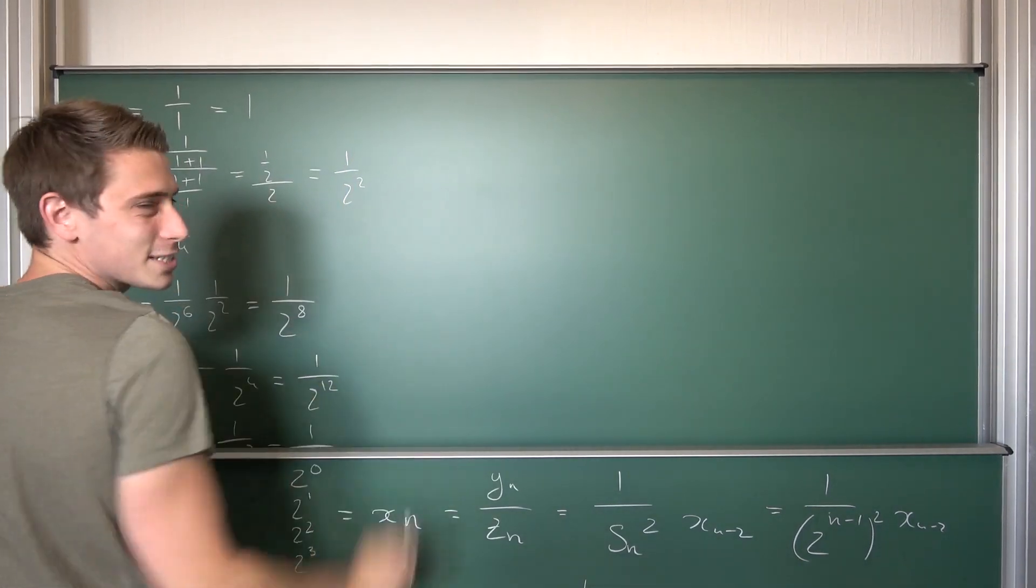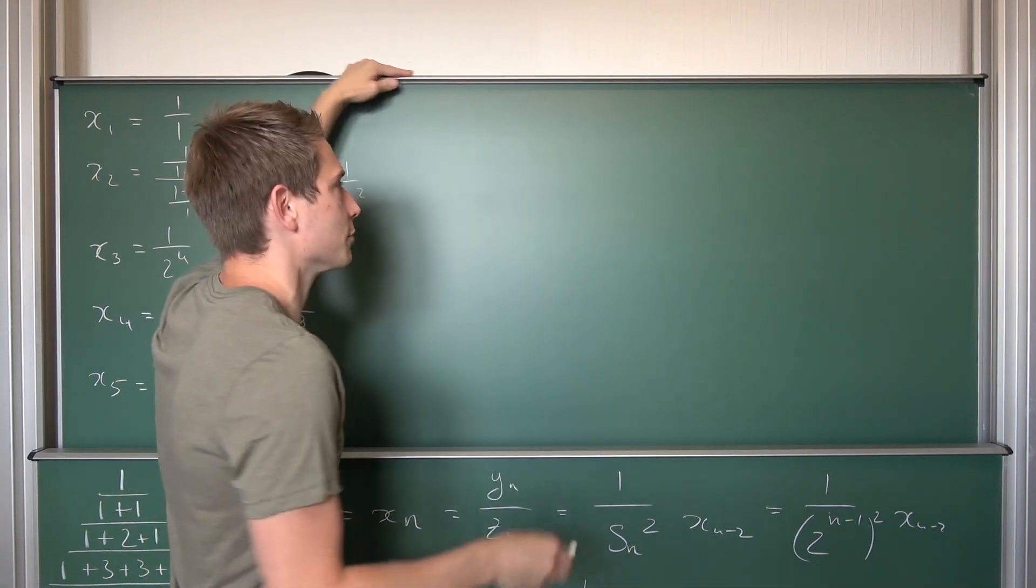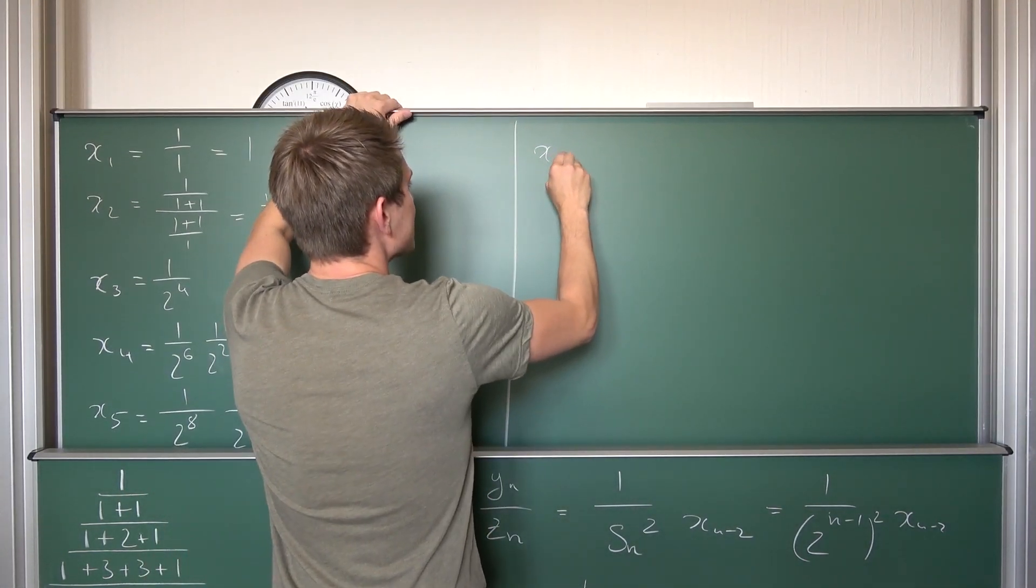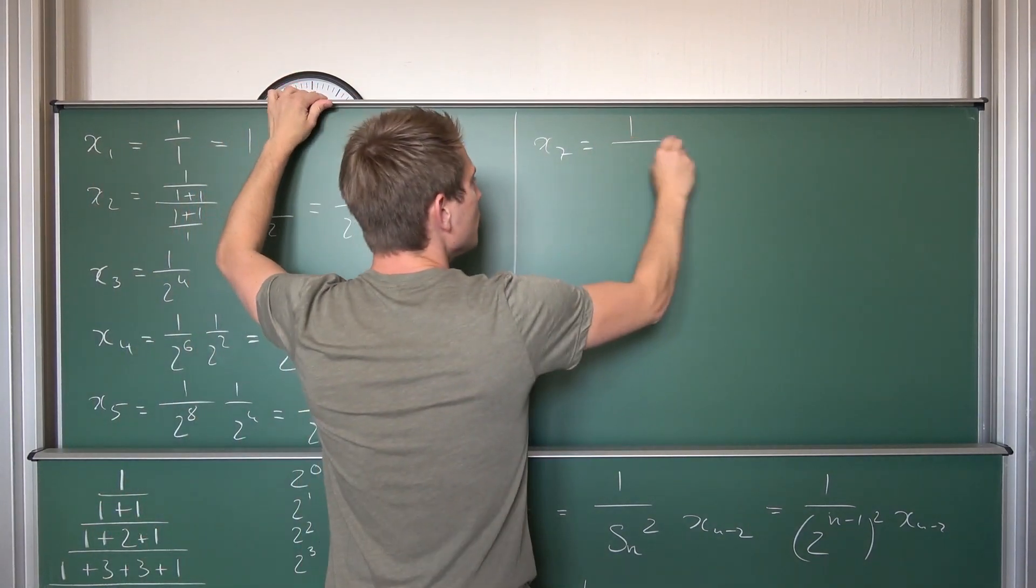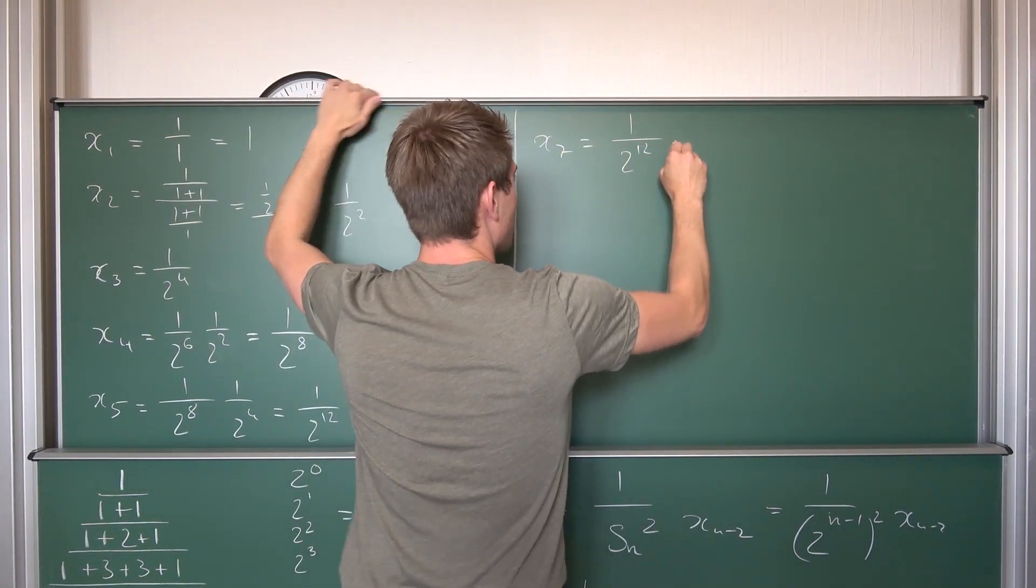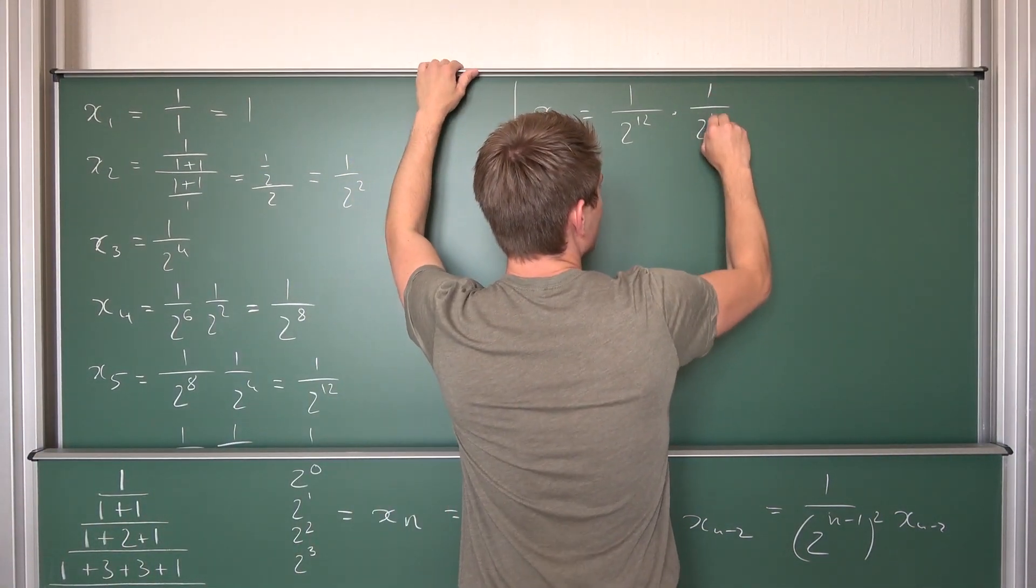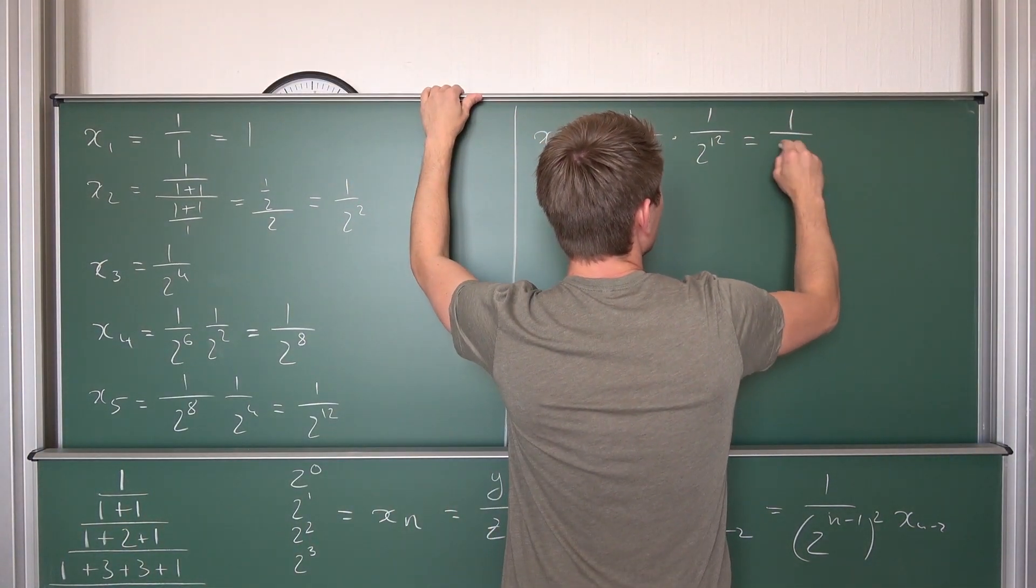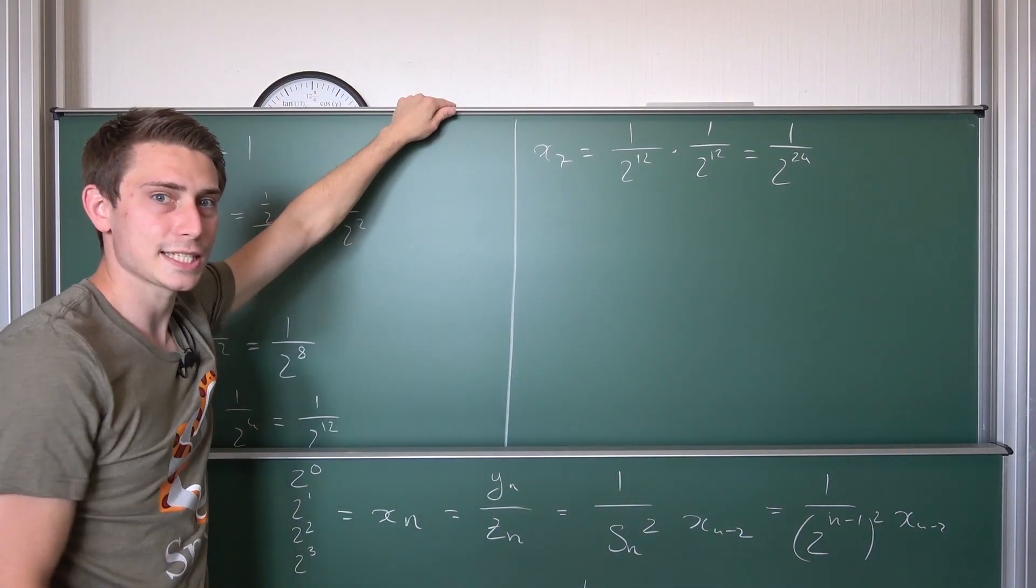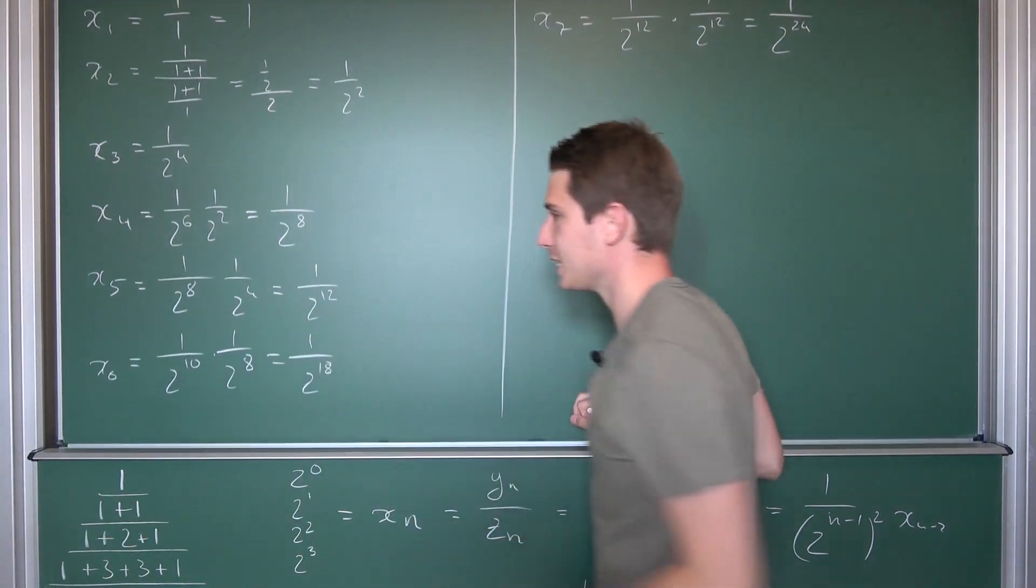We need to go further. We don't see it yet. Now let us do one last iteration and maybe we can see a pattern then. It's kind of a complicated pattern. It took me one or two minutes to actually find it out for myself. So now for x7 we are going to get 1 over 2 to the twelfth power. Times x5. x5 has been 2 to the twelfth power. 1 over 2 to the twelfth power gives us 1 over 2 to the 24th power.